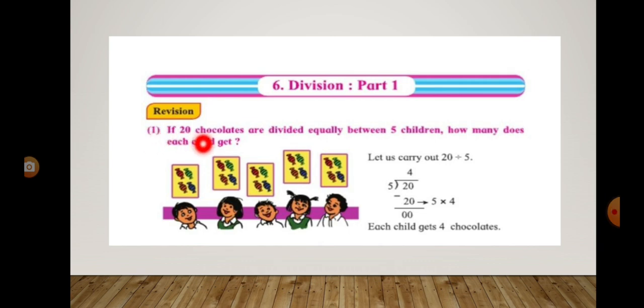Revision. If 20 chocolates are divided equally between 5 children, how many does each child get? Let us carry out 20 divided by 5. 5 fours are 20, so each child gets 4 chocolates.